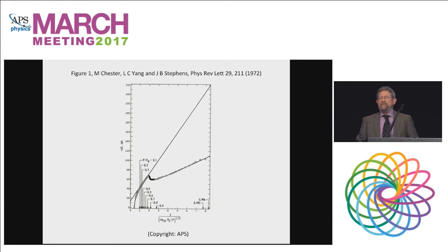Now, because there was some experimental evidence for the n equals 2 case, and this was a figure from a paper by Chester, Yang, and Stevens from an experiment they did in the late 60s, early 70s, published in 1972. The data there shows clearly that there's a two-dimensional film of helium-4 at low temperatures.